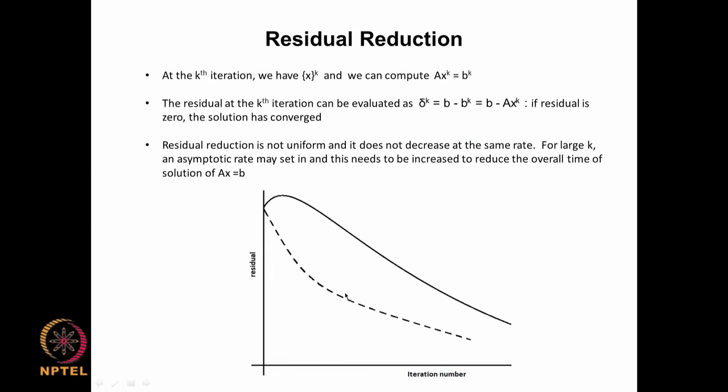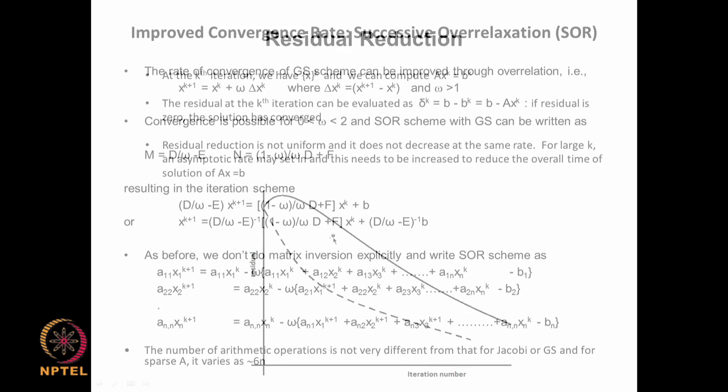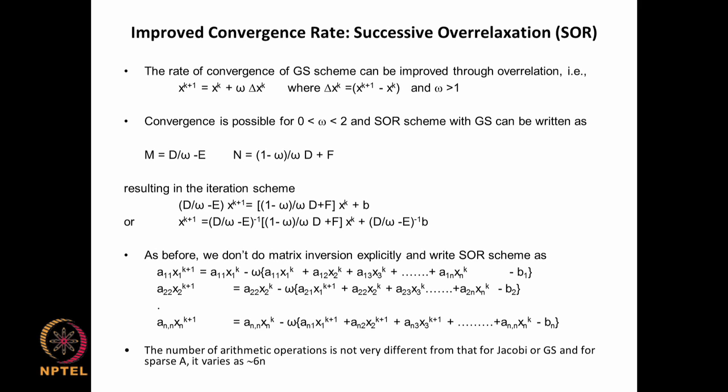It looks like we had a longer session in the last lecture, so we will try to make it slightly lesser this time. To begin with, we are looking at an advanced method which will increase the rate of convergence of our iteration method beyond what we can get with Jacobi method and Gauss-Seidel method. One of the first methods proposed is known as the successive over relaxation method, and this method goes together with Jacobi and Gauss-Seidel as almost like a basic iterative method, because it is not very different from those methods.